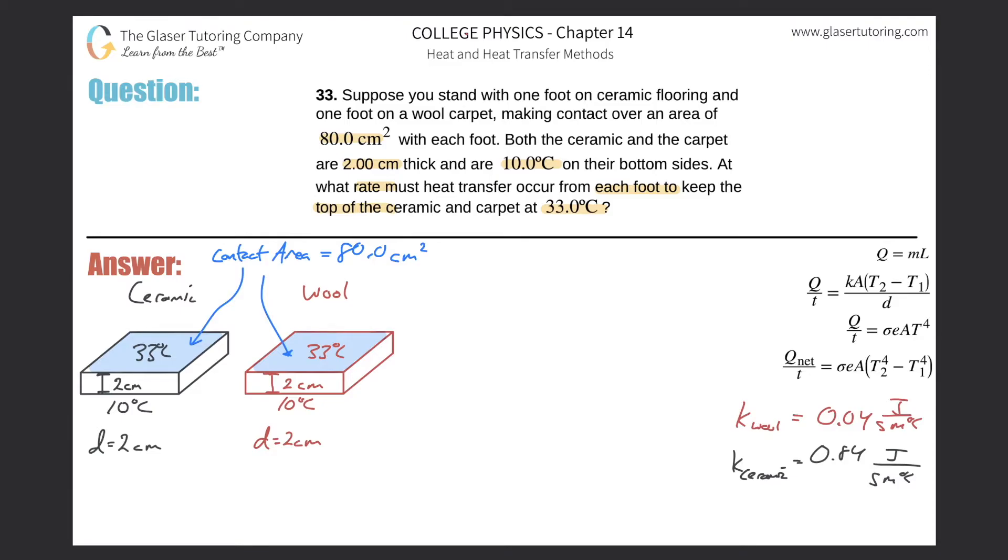Now basically what we need to do is calculate the rate that must be transferred on each. So anytime they start talking about rates, it's power. Rate of heat transfer, rate of energy transfer is always power and power is equal to energy per time. And in this chapter, energy has the letter Q because it's heat energy. And then we're talking about time. So if you look over here, this is a power value.